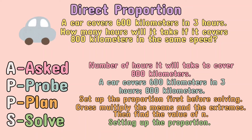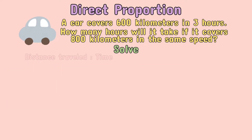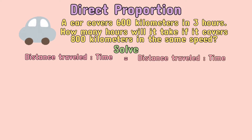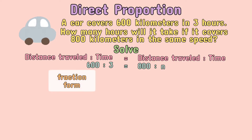Solve — setting up the proportion. Distance traveled to time equals distance traveled to time: 600 to 3 equals 800 to n. Let us now start solving. To do this, we will show the proportion in fraction form: 600 over 3 equals 800 over n.